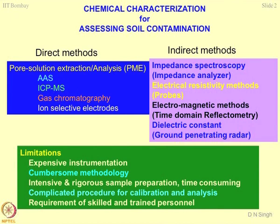In the previous class, we were talking about pore solution extraction. Truly speaking, there are two methods of determining or assessing soil contamination. One is the direct method and the second one is the indirect method. In the direct method, basically what is done is you take out the pore solution from the soil sample, for which we have discussed lysimeters, centrifugation, and pressure membrane extractor.